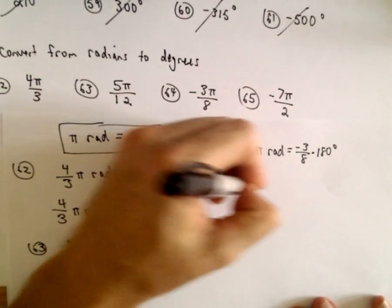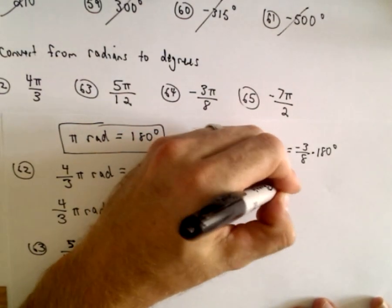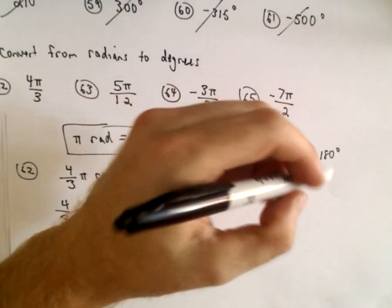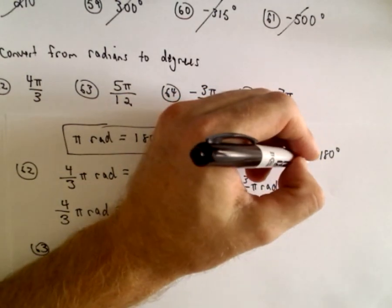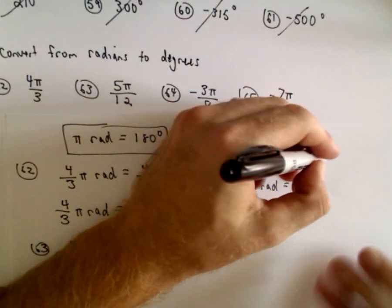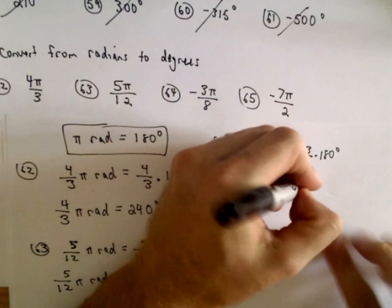So we've got negative 3 over 8 times pi radians. Let's see, let's simplify here a little bit so we could divide both of these by 2.